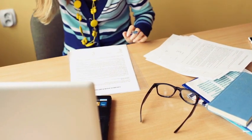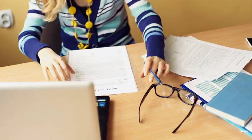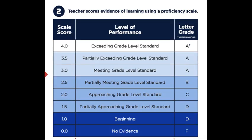Teachers assign a proficiency level for each learning requirement using a scale of 0 to 4. A score of 0 communicates that no evidence has been submitted. A score of 1 communicates that the student is beginning to learn the skills. A score of 1.5 to 2.5 communicates that the student is approaching proficiency. A score of 3 to 4 communicates that the student is meeting or exceeding proficiency for the learning requirement.